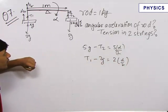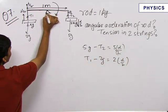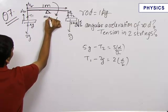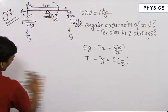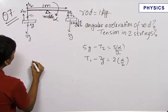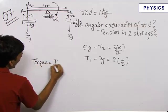Now, the third equation which we will get is by this rod. This rod is hinged at its middle. Therefore, we can write the equation net external torque on the rod is equal to I alpha.